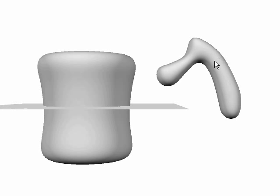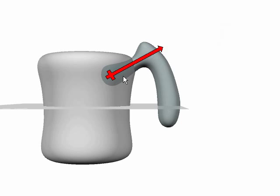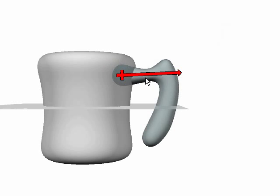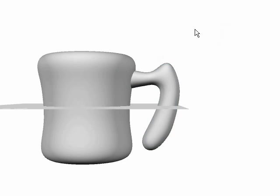A longer stroke ending with a pigtail enters a transformation stroke mode. Each time a line stroke is drawn, the red arrow is aligned with it in the screen plane. To exit the mode, simply deselect the object.